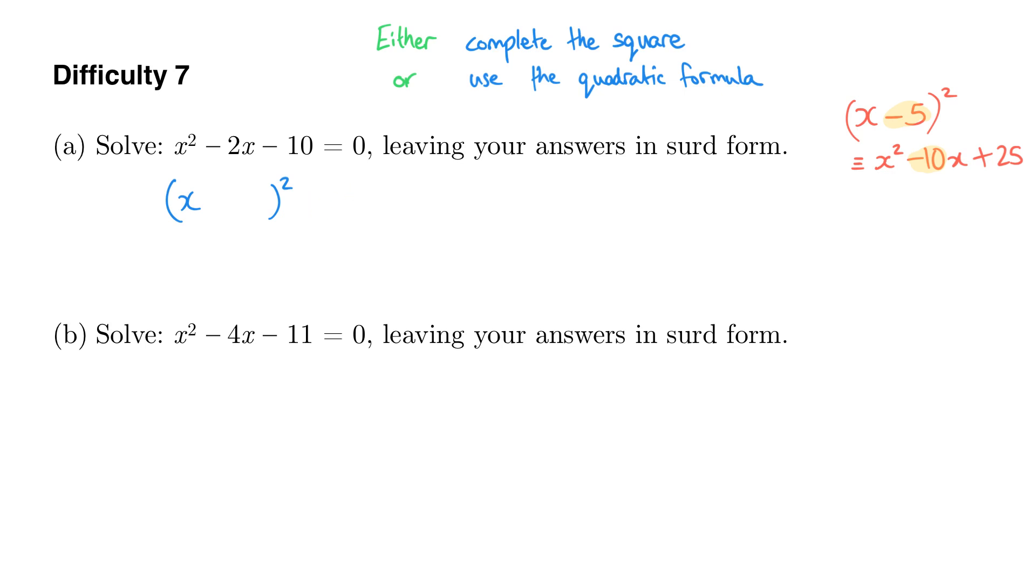The key thing I want you to observe is that the coefficient of x is double this value in your factorised form. Because we know that the expanded version has a coefficient of x that is double what we need in the brackets, that means what we need in the brackets here is going to be minus 1. So if you think about what this gives us when we expand it, this would give us x squared minus 2x plus 1.